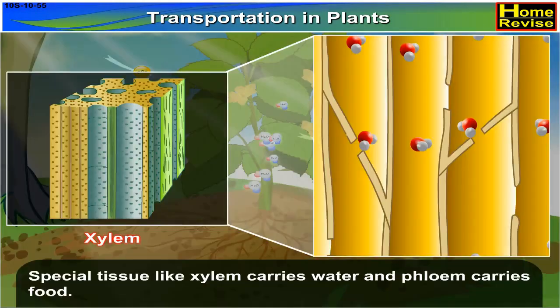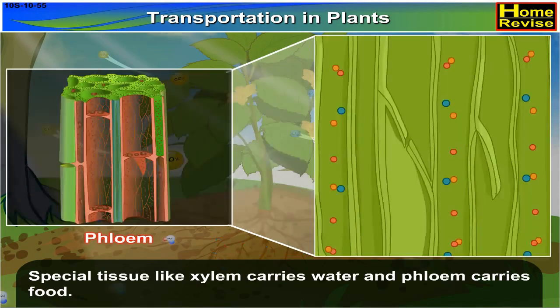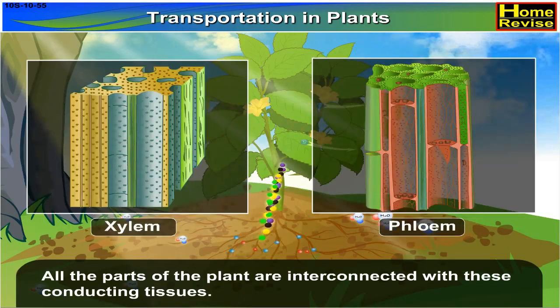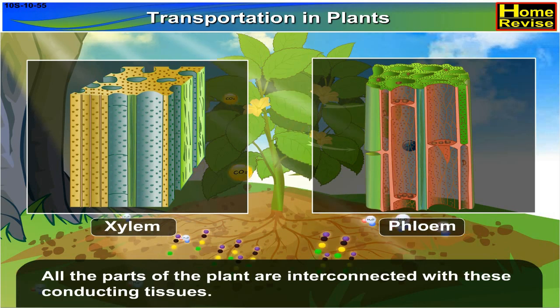Special tissue like xylem carries water and phloem carries food. All the parts of the plant are interconnected with these conducting tissues.